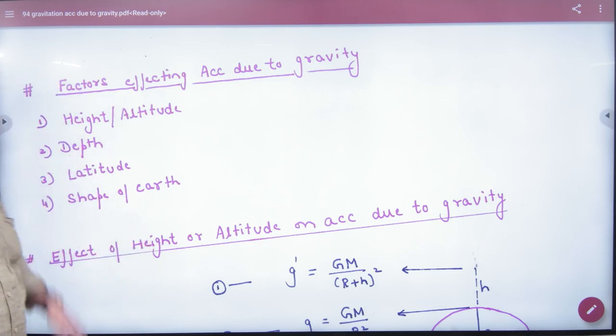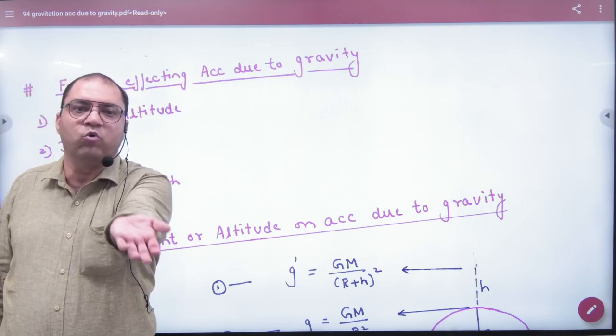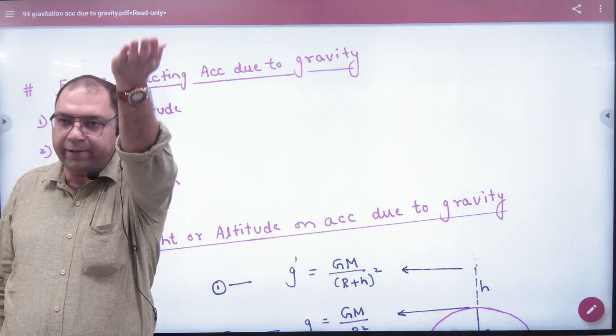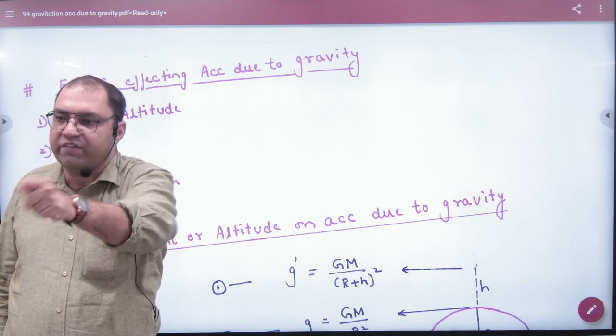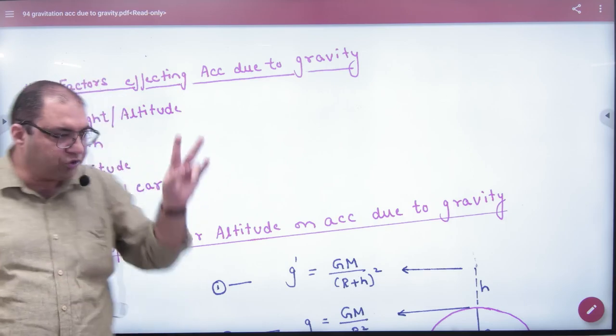Point number one: height or altitude. If you start from the surface of Earth, then the object will increase from the center. Small g value will change from the center.